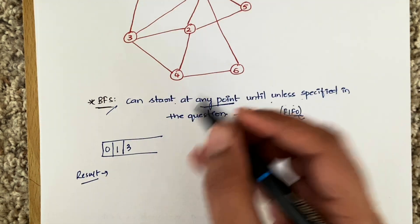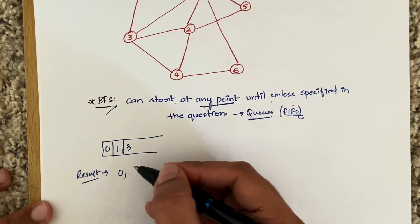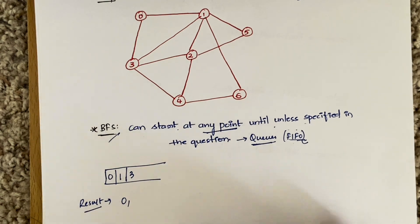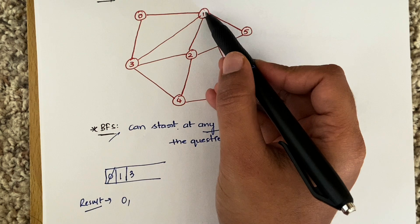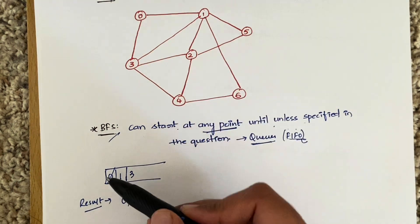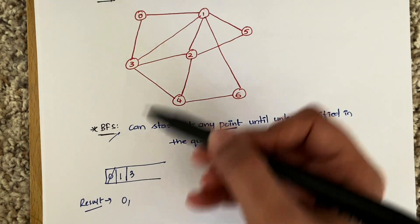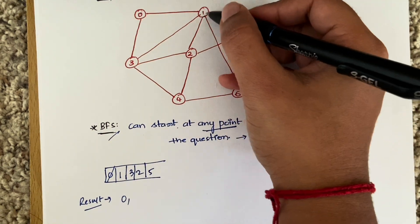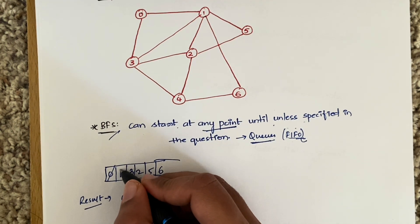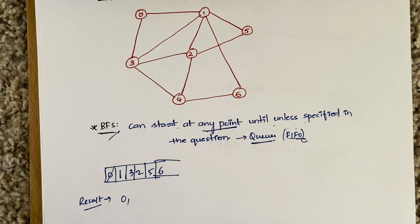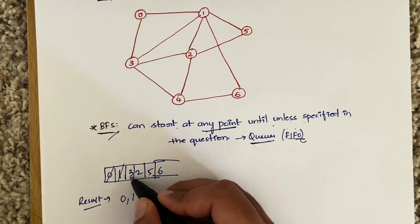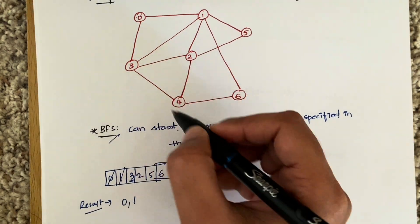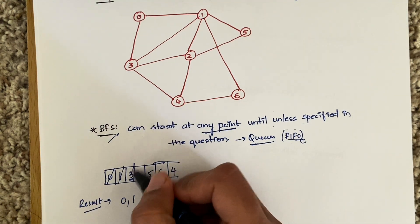Zero is done. Next is node one. From one, you can go to zero (already covered), three (already in the queue), two (new), five (new), and six (new). So we add two, five, and six. One is now done — strike it off and add to the result. Next is node three. From three you can go to zero, one, and two (all already there), but four is new — add four. Three is done.